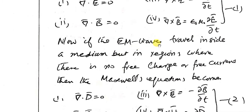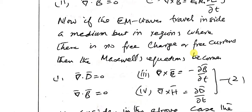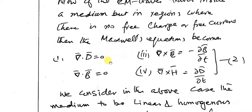Now, if the electromagnetic wave travels inside a medium, but in regions where there is no free charge or free current, then the Maxwell equations become: divergence of D equals zero, divergence of B equals zero, curl of E equals minus delta B by delta t, and curl of H equals delta D by delta t.